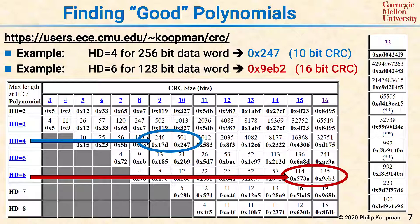As you can see from the 32-bit column, you can get impressively long data words with good Hamming distances if you pick the right 32-bit CRC.